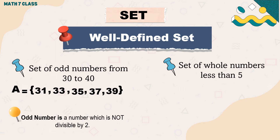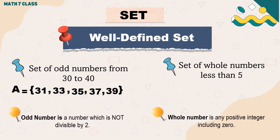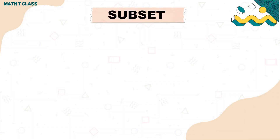Next, a set of whole numbers less than 5. A whole number is any positive integer including zero. So the set of whole numbers less than 5 are 0, 1, 2, 3, and 4.